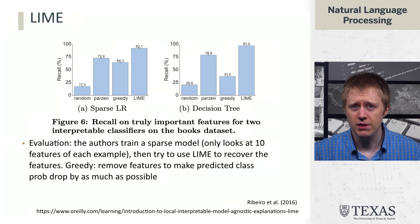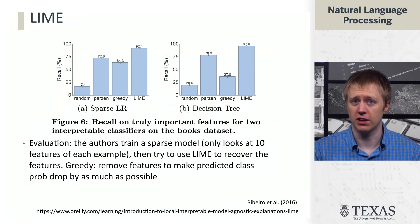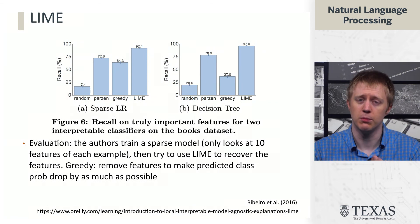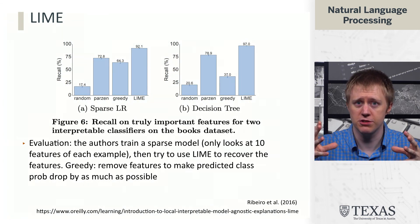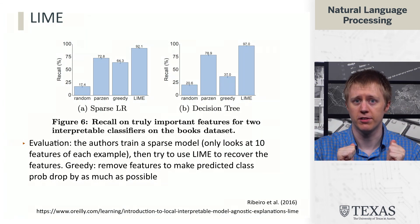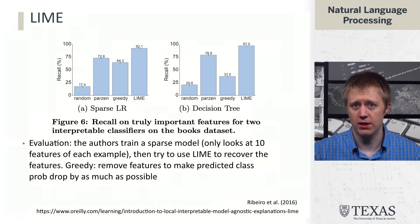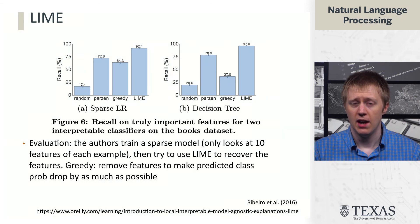So they evaluated this by looking at a couple of models where we know the explanation. They looked at a sparse logistic regression model and a decision tree model. These are models that I would say are transparent. Just by looking at them we understand how they behave. But what they were doing was trying to say, can our black box explanation technique explain the behavior of these models? And what they were looking at was can it recover the features that we know these models to be using? And it turned out it was able to do this pretty well and better than some other existing techniques at the time.